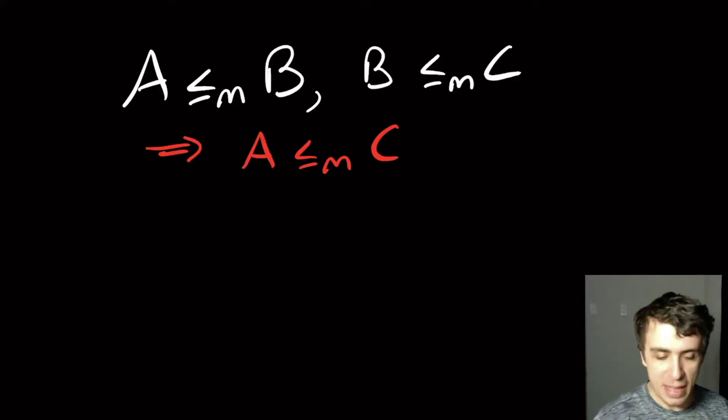Hi, so I want to show today that the mapping reductions are transitive. So what does transitive mean?